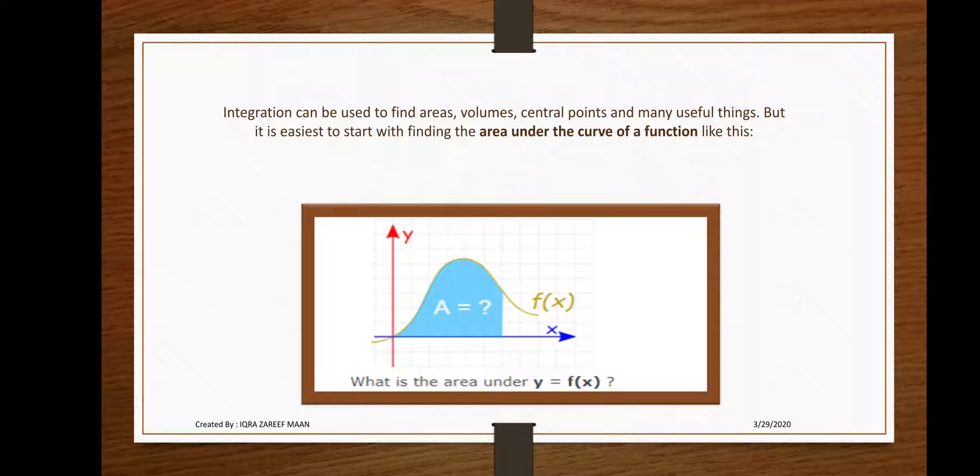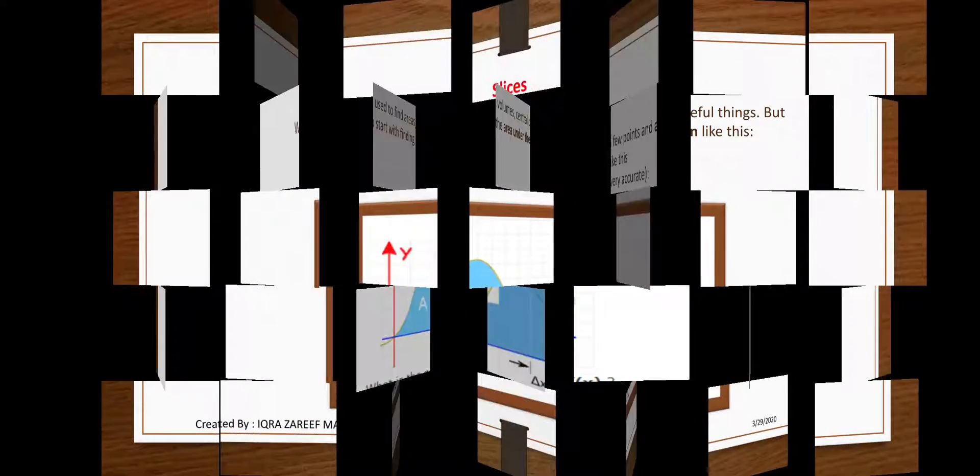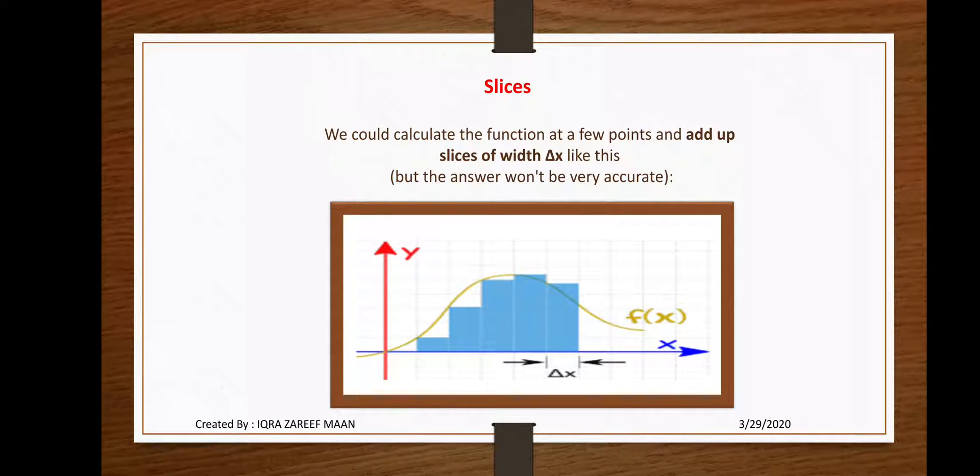First of all, we divide this area into some slices. We could calculate the function at a few points and add up slices of width Δx like this, but the answer would not be very accurate. Here we see that the width of slices is not very small.